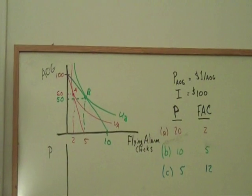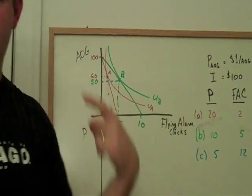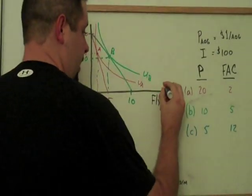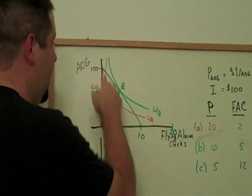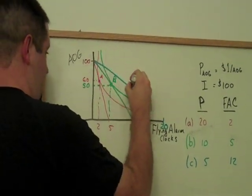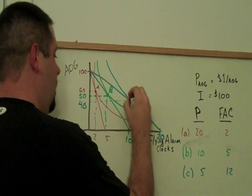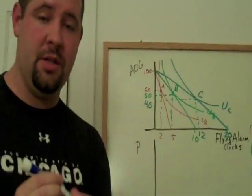Let's do this last one a bit more quickly. We have a price of $5. If we spend all of our money at a price of $5 on flying alarm clocks, we'd have a lot of flying alarm clocks. We would have 20. So there's a point on our budget constraint. Again, the price of all of the goods doesn't change. So we can connect this dot here. Straight line.